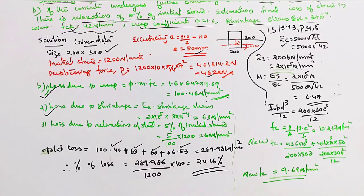Total percentage of loss is 24.16%. This is the final answer for the pre-tensioned concrete beam problem.